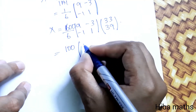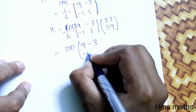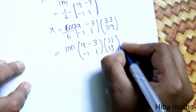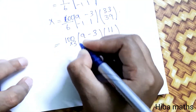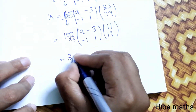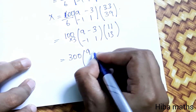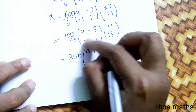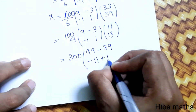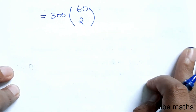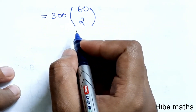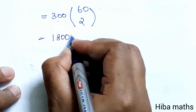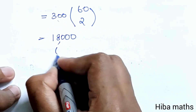The value of A inverse gives us [9, -3; -1, 1]. Now computing the matrix multiplication: 9 into 11 is 99, minus 3 into 13 is 39, giving minus 11 plus 13. Next step, 300 into 60 gives 2. Inside multiplication: 18, 3, 0, and 3, 2, 0. This gives us the capital X value solution.